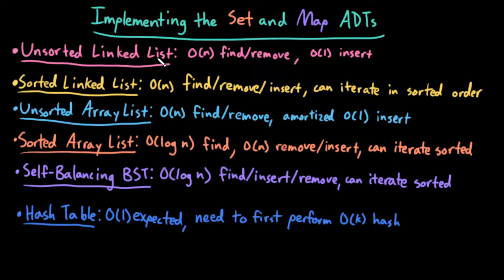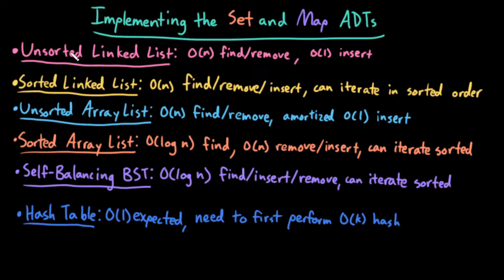The first potential data structure I'll talk about is the unsorted linked list. An unsorted linked list is just a bunch of nodes strung together in a chain. We have a big O of N worst case find or remove operation — we might have to search through all N elements before we find the element or fail to find it. However, because we're not maintaining any sorted order, we have a constant time worst case insertion. We can just arbitrarily add to the beginning or the end, which is just a constant time set of pointer changes.